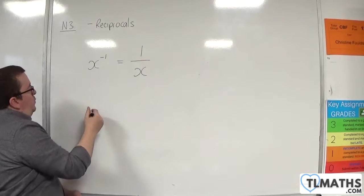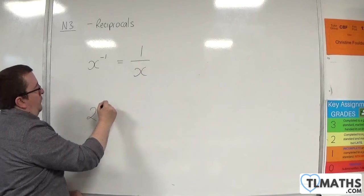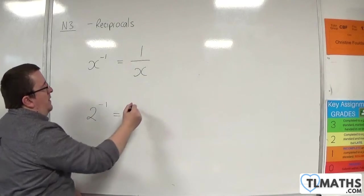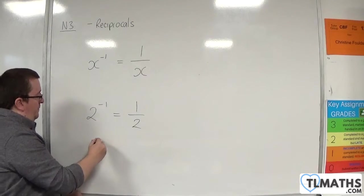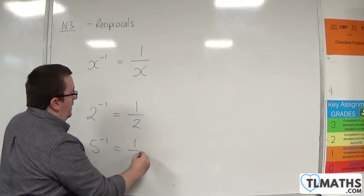If you want the reciprocal of 2, then that is 1 half. If you want the reciprocal of 5, then that is 1 fifth.